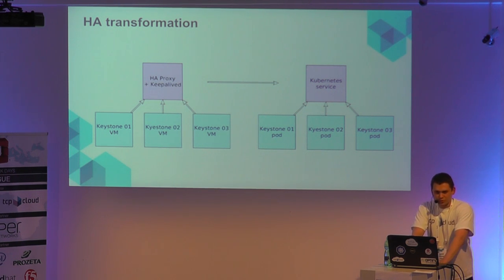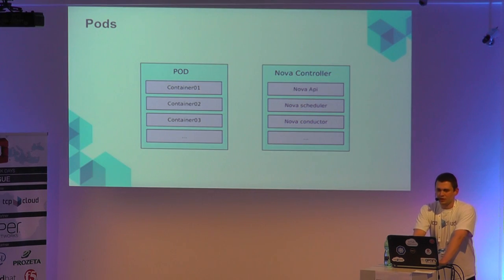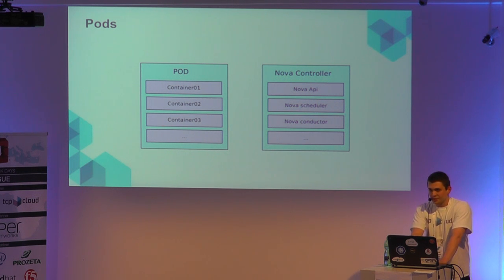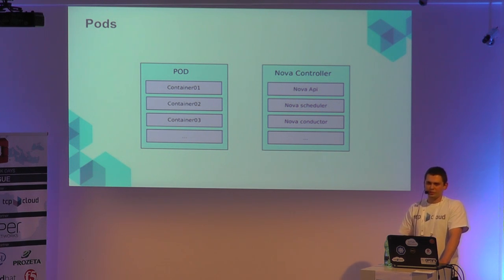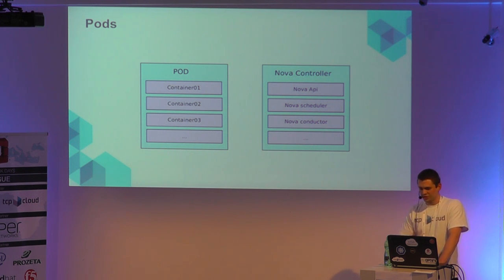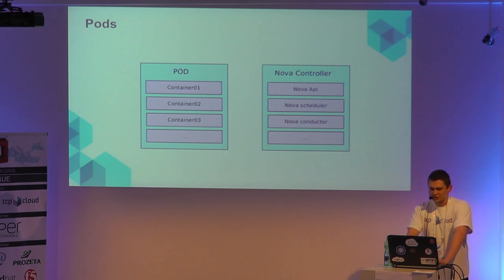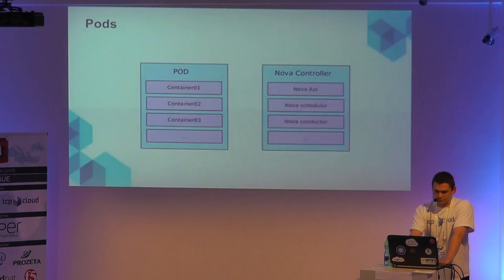What is used for balancing? With Calico you use iptables, but there is also a possibility for IPVS user-space balancing. In the previous slide you saw keystone pods, not a keystone container, because Kubernetes delivers another resource. The smallest unit is a pod — it's a bunch of containers sharing a networking namespace. So for example, when you have a Nova controller, you have six different Docker containers that share the networking namespace.